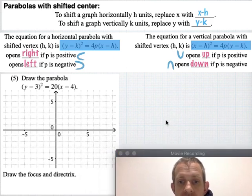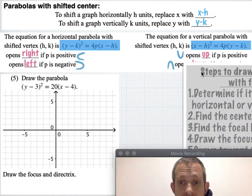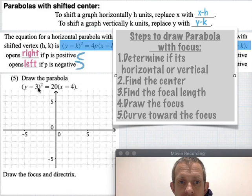So in this problem we have to draw a parabola that has a focus. I would suggest following a couple steps if you want to draw a parabola with focus. First of all decide if it opens to the left or to the right. Then figure out where its center is. Simply look at what makes this a zero and what makes this a zero. Then find the focal length. We did that in the last video looking at the part near where 4p is in the equation and solving that for p. And then finally you can draw the focus and draw a curve towards that focus.